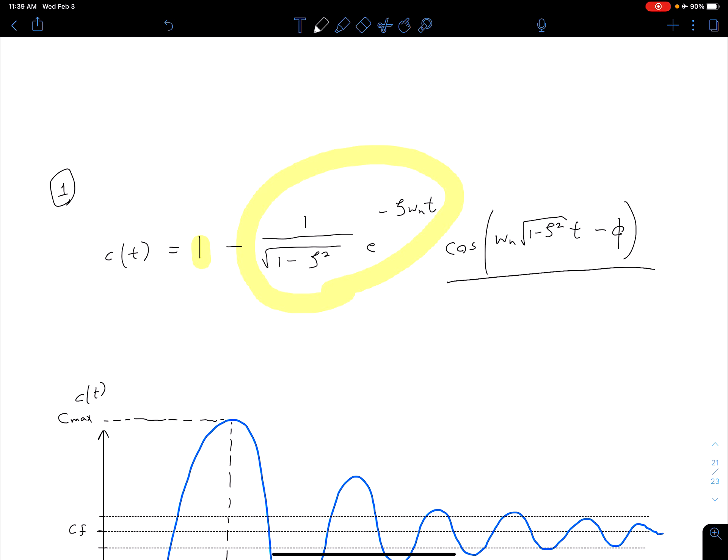For example, maybe when this is at 0.02, our cosine term might only be at 0.5, in which case we're within our 2% settling time. So we're kind of accounting for our worst-case situation here.